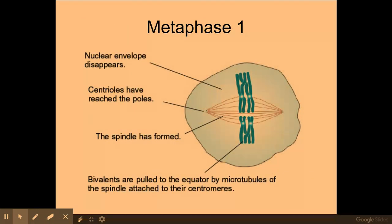Metaphase one: this is where my bivalents will line up along the equator of the cell and the spindle fibers will attach to the centromeres. Now this is where independent assortment occurs, and again independent assortment is one of the ways in which genetic variation can be derived.